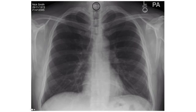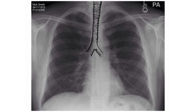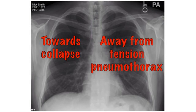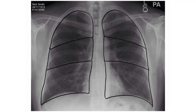Start with the trachea and work your way down. The trachea contains air so it is blacker than its surroundings. Check if it is centrally positioned or deviated to one side. The trachea can be pulled towards the side of collapse or pushed away from the side of a tension pneumothorax. When describing a chest X-ray, the lungs are divided into upper, middle and lower zones. Note this does not correlate with the lung lobes.